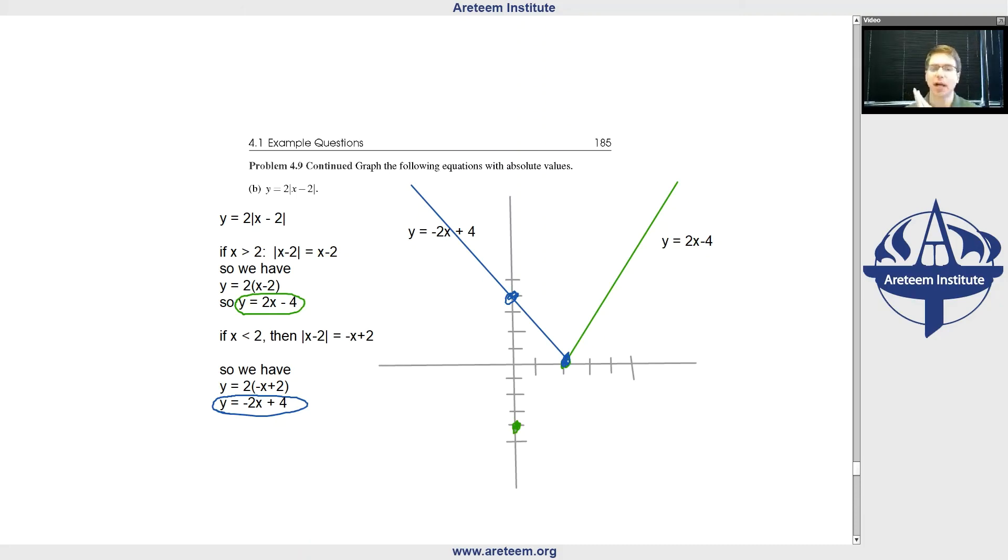That shouldn't surprise us too much. It's a slightly different V. It's moved over a little bit. And if you drew this, it would be a little bit narrower if you graphed it on graph paper. But it's the same type of equation. Again, we're getting this V for the absolute value.